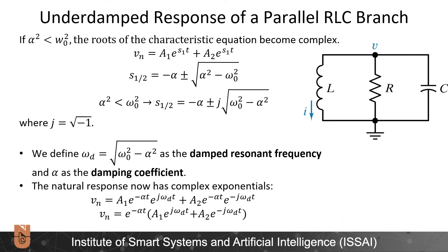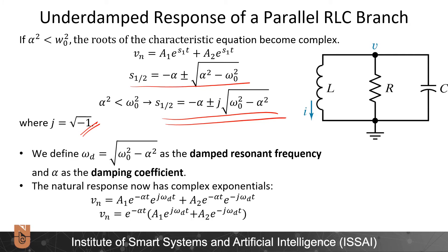Now let us look at the under-damped response of a parallel RLC branch. In this case, alpha squared is less than omega zero squared and the roots of the characteristic equation are complex. So S1, S2 equal minus alpha plus or minus j times the square root of omega zero squared minus alpha squared, where j is the square root of minus 1. We define omega_d equal to the square root of omega zero squared minus alpha squared as the damped resonant frequency, and alpha is the damping coefficient.